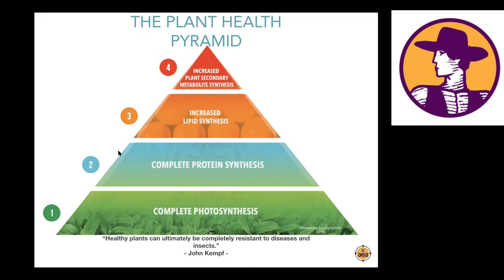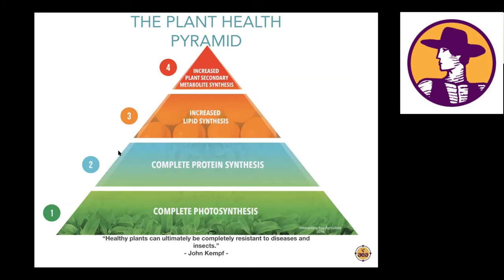The second level is when plants develop complete proteins. This means that in every 24-hour photo period, all of the nitrogen they absorb — whether in the form of nitrate, ammonium, or living bacterial cells — is converted or stored in the form of complete proteins. Plant sap no longer contains any detectable levels of nitrate, urea, ammonium, or any of the ionic forms of nitrogen. The third level is when we have increased lipid synthesis — plants with a higher fat content, observable visually as a glossy waxy sheen on the leaf surface.